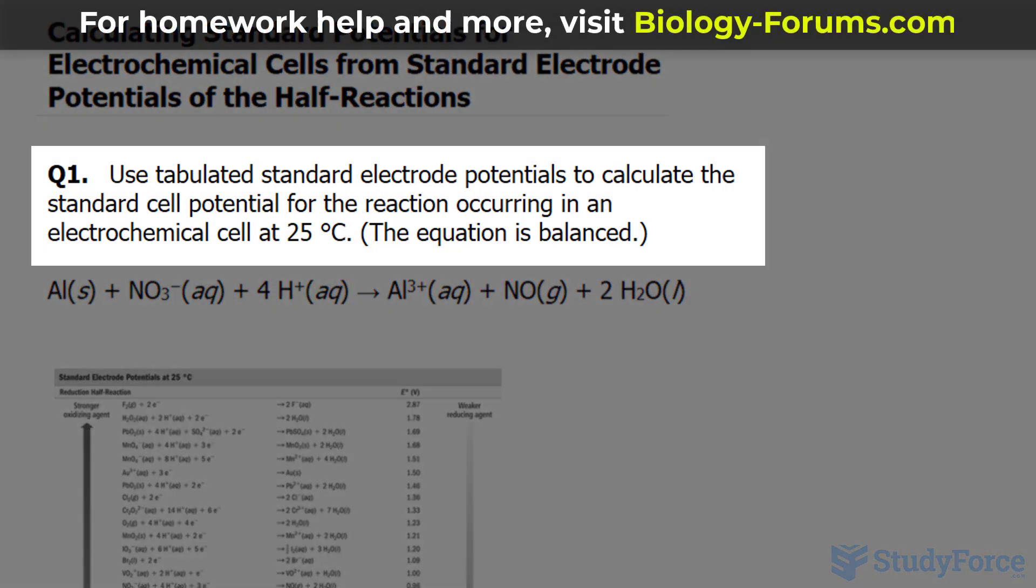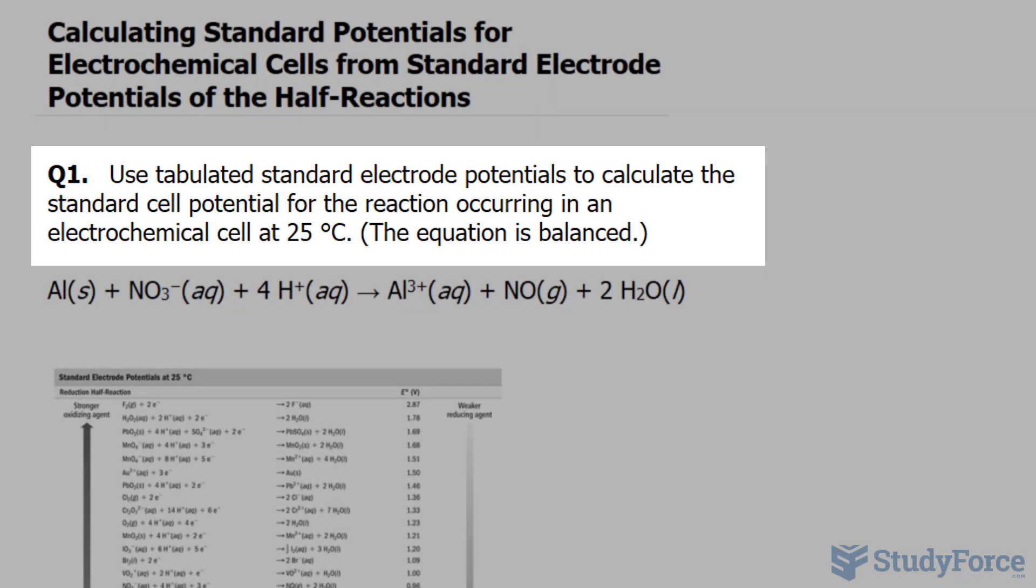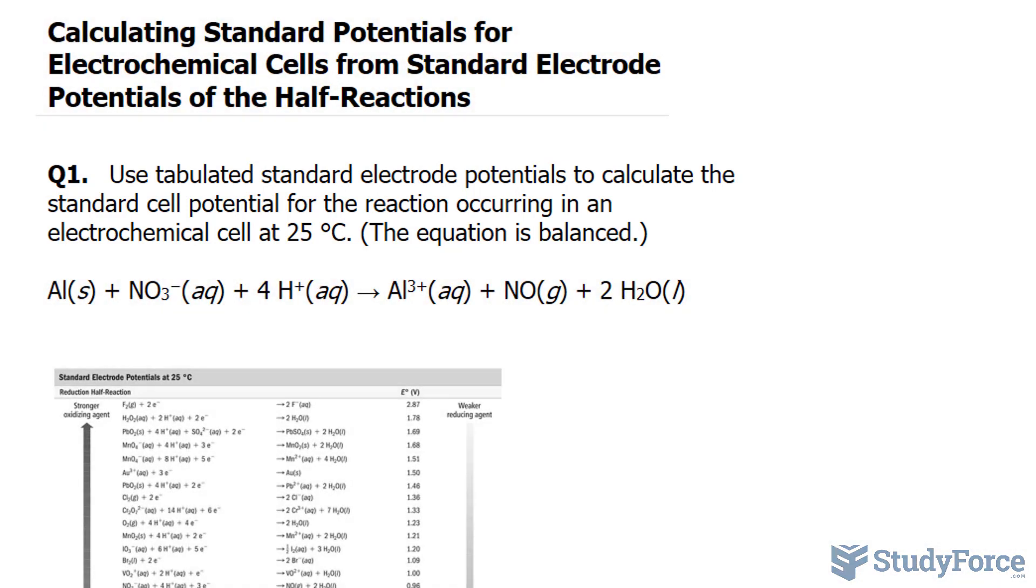Use tabulated standard electrode potentials to calculate the standard cell potential for the reaction occurring in the electrochemical cell at 25 degrees Celsius. And the balanced chemical equation for this is shown underneath.